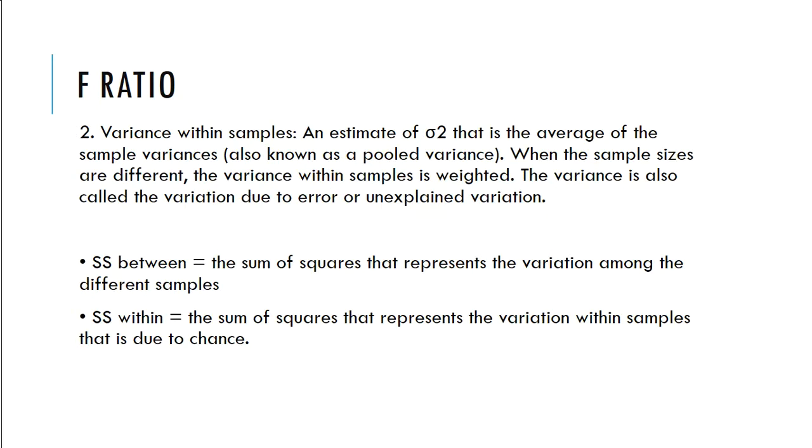Variation within samples. An estimate of sigma squared that is the average of the sample variances is also known as the pooled variance. When the sample sizes are different, the variance within samples is weighted. The variance is also called the variation due to errors or unexplained variation.